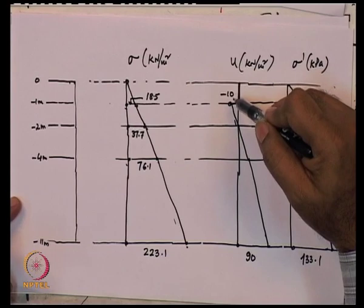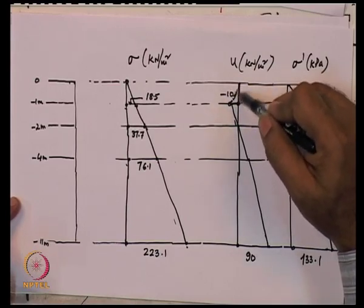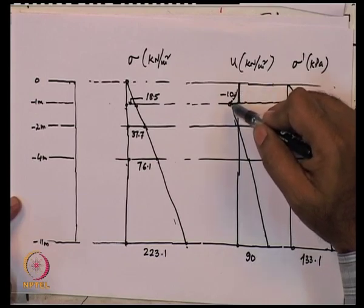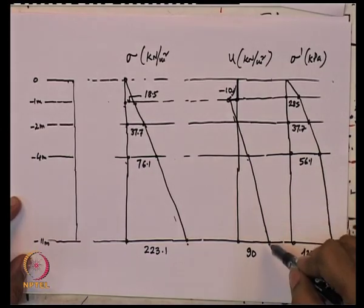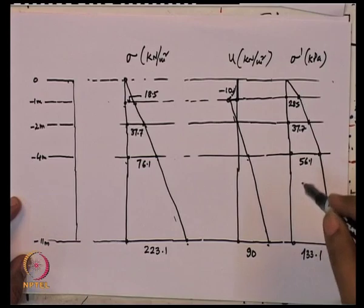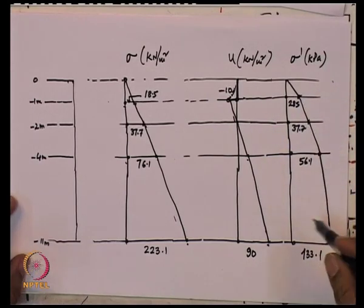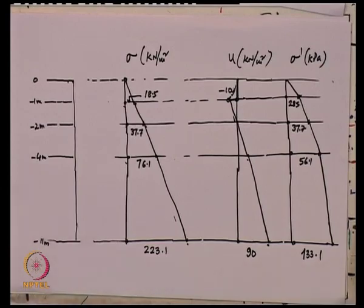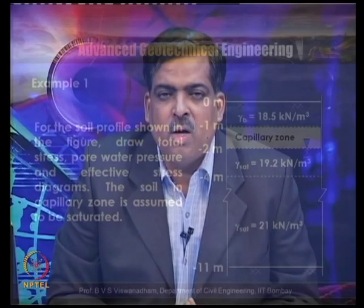In the pore water pressure diagram, the capillary saturated zone shows −10 kPa. As we move toward the ground surface, the pore water pressure reduces to zero due to partial saturation. Below the groundwater table: 0 at the table, 20 kPa at −4 m, and 90 kPa at −11 m. Using σ′ = σ − u, the effective stress diagrams are obtained. The concepts discussed in this module have been applied to draw the diagrams considering the groundwater table with the capillarity effect.